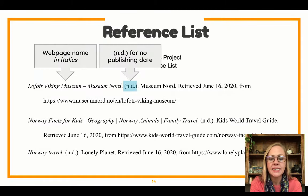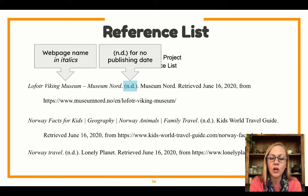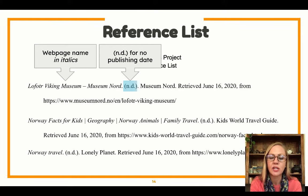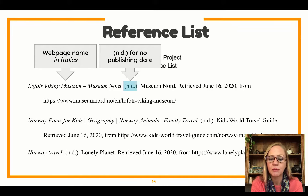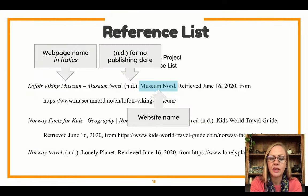Inside the parentheses you put 'n.d.' for no publishing date. If there's a publishing date, that's where the date goes. But if there's no date, we put N dot D dot, and that means no date. After the parentheses there's another full stop. And then we have the website name — 'Museum Nord' — and then a period. You'll notice the capital letters also must be correct here.